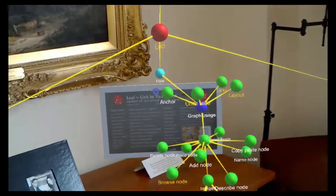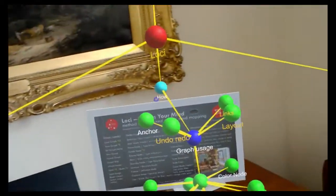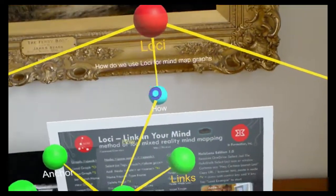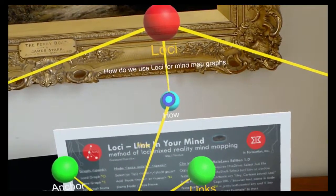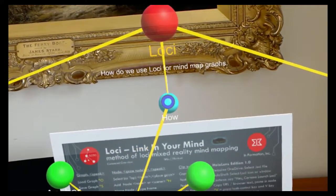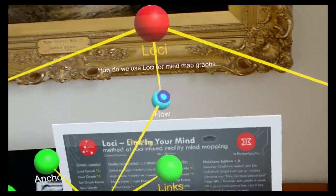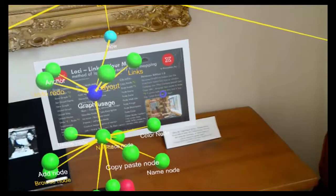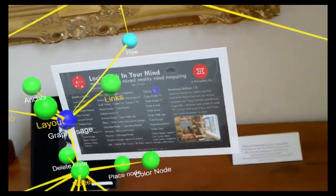And sometimes you may not want the billboarding of the image to always follow you. So you can say Freeze Node. This locks the node in place. And it also stops the billboard from moving around.